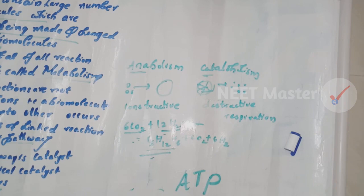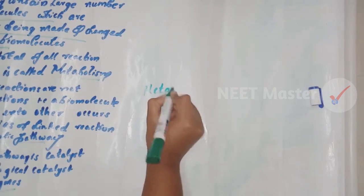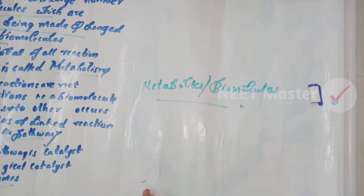There is a series of linked reactions in the metabolic pathway. The metabolic pathway consists of enzymatic reactions — the catalyst is a biological catalyst. The metabolic pathway maintains a steady state in living organisms, which contain many biomolecules and chemical components at different concentrations.